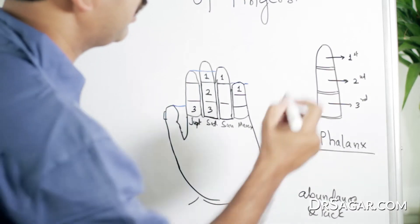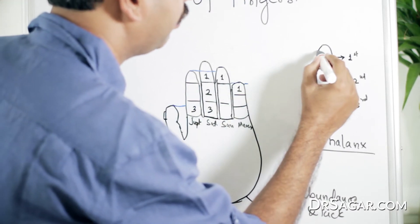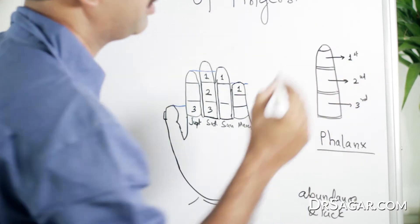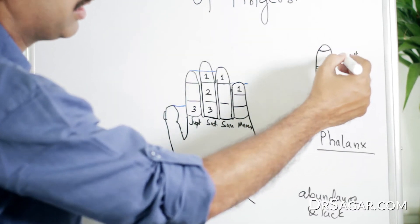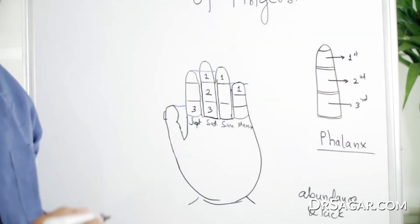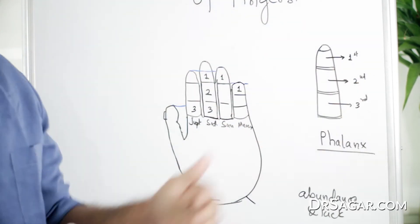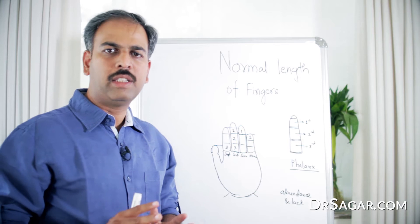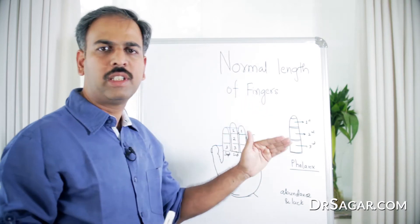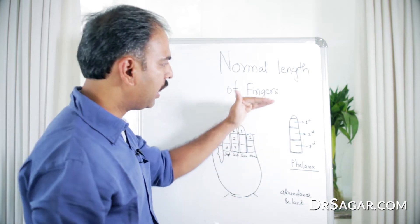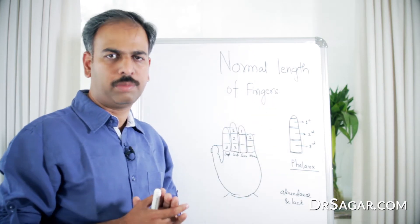The first phalanx is the nail part of the finger. We'll start from the upper, first, second, and third. This is how the finger is divided into three phalanges: upper, middle, and lower, or you can say first, second, or third. It starts from the nail part of the finger.